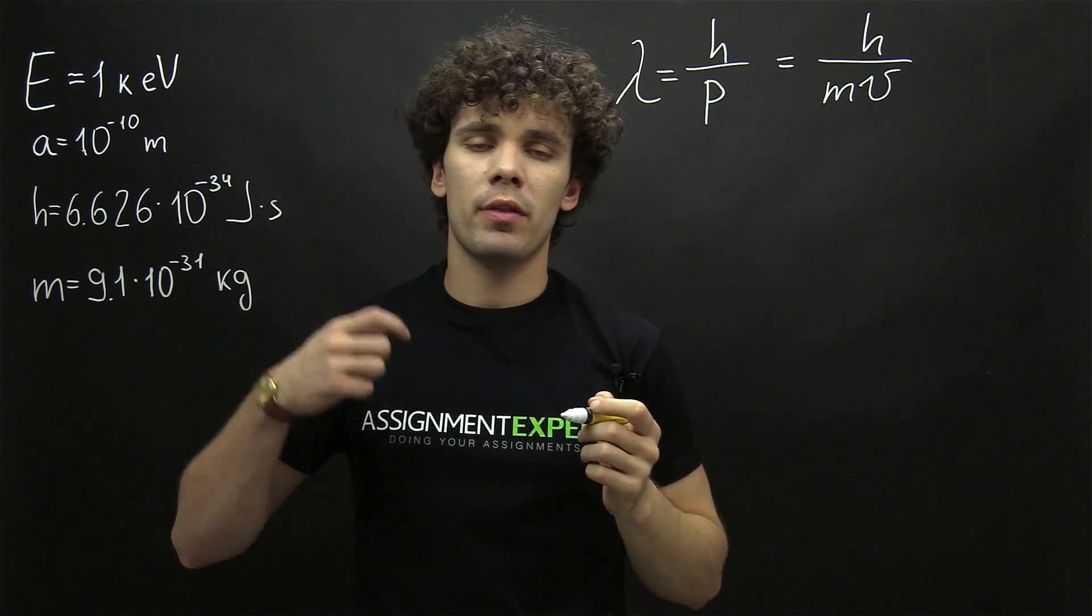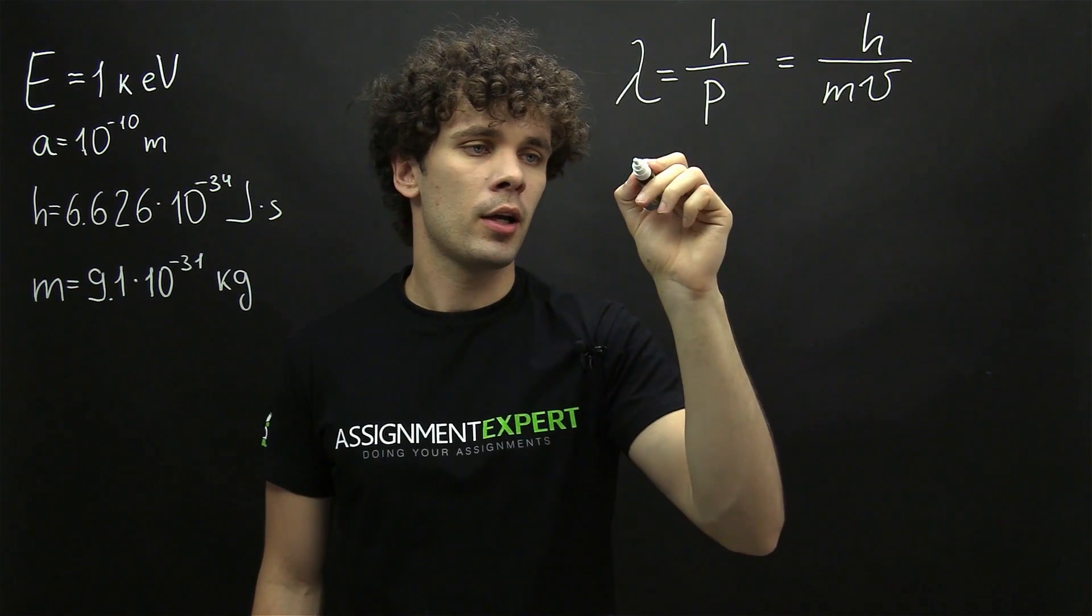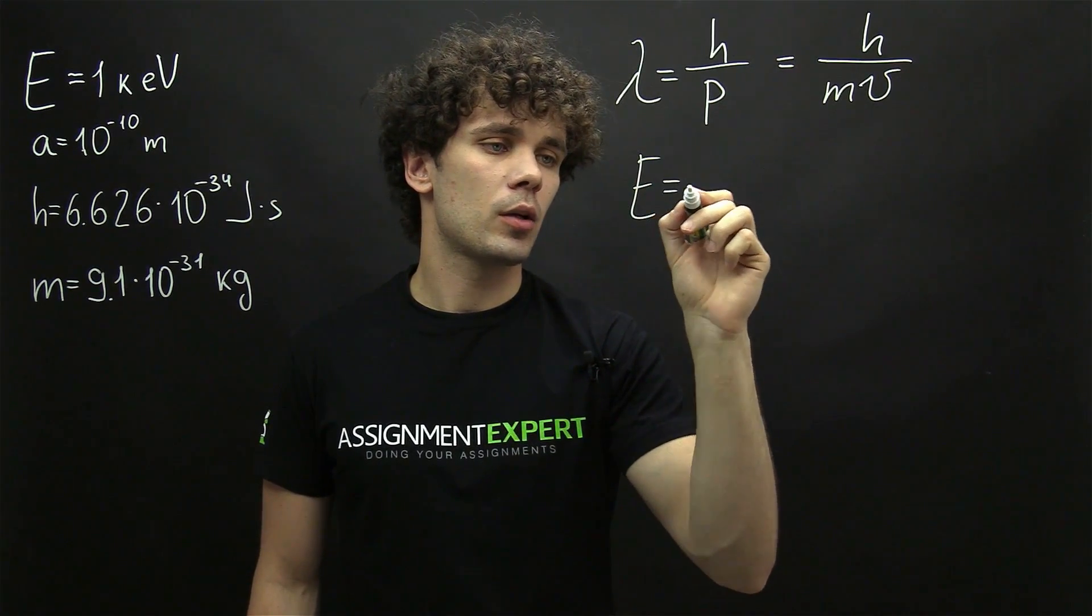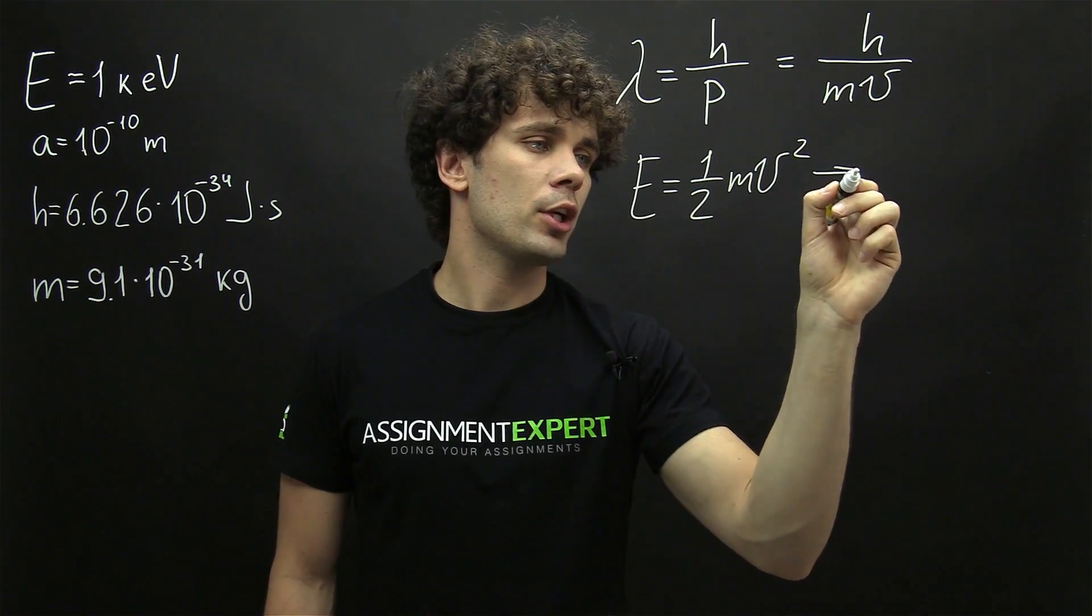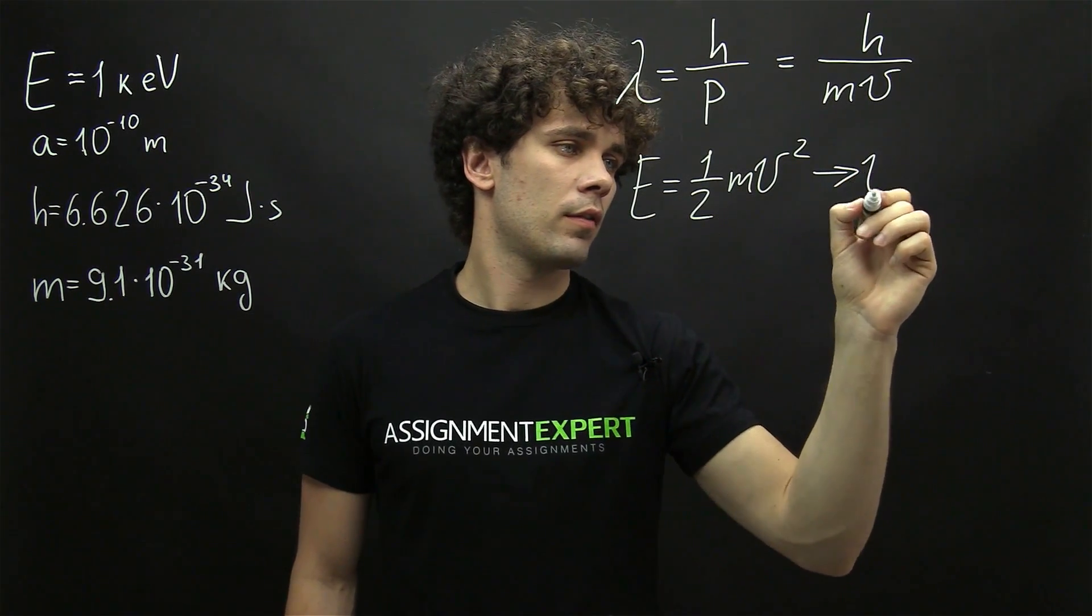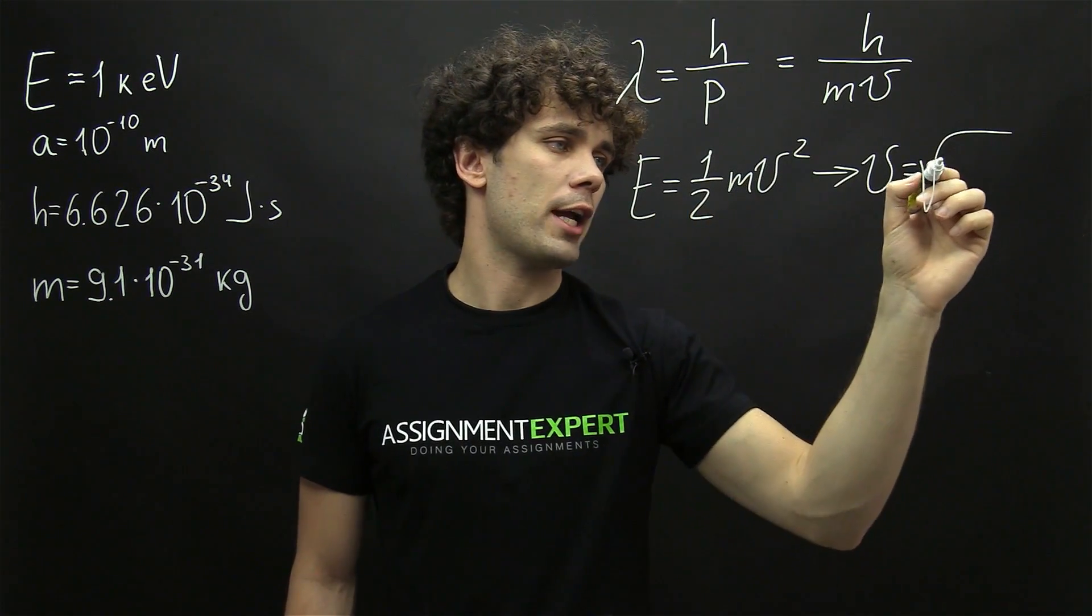Now, the energy of the beam is related with the velocity of the electron in the following way. E equals 1 half times mv squared. From here we can derive velocity. Velocity equals the square root of 2E over m.